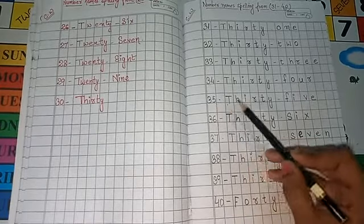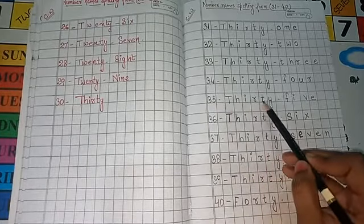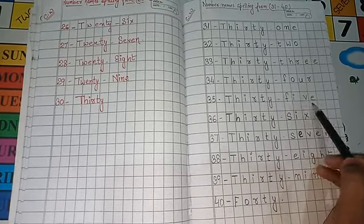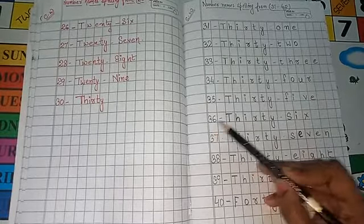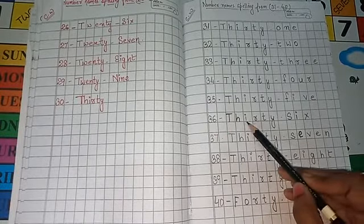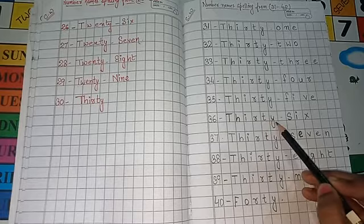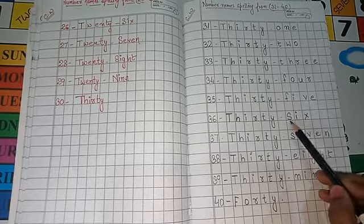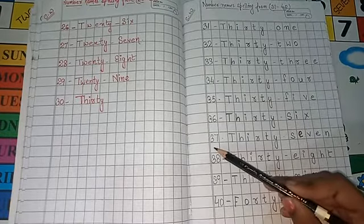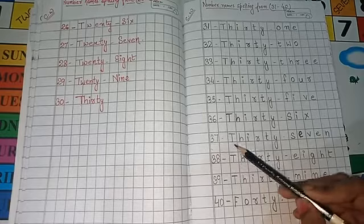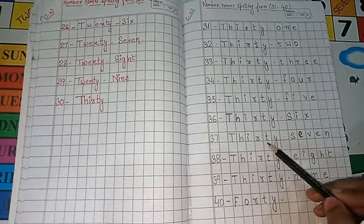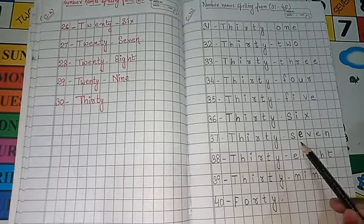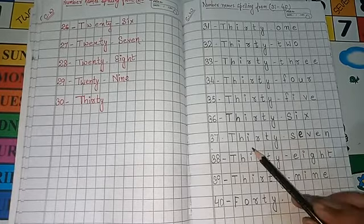Next 35, T-H-I-R-T-Y, 35, F-I-V-E, 5. Next 36, T-H-I-R-T-Y, 36, S-I-X, 6. Next 37, T-H-I-R-T-Y, 37, S-E-V-E-N, 7.